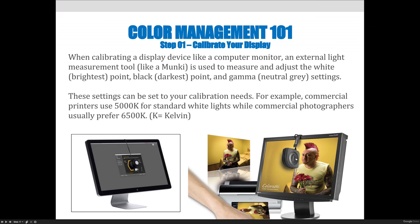When calibrating a display device like a computer monitor, an external light measurement tool like a Monkey — which is just a brand name you can Google — is used to measure and adjust the white point or brightness, the black or darkest point, and the gamma, which is the neutral gray settings. These can be set to your calibration needs. For example, commercial printers typically use 5000 Kelvin for standard white light, while commercial photographers prefer 6500 Kelvin. For our class we're just learning skills-based Photoshop, but if you ever get into color-critical work, you want to make sure what you're seeing is what you're going to output.